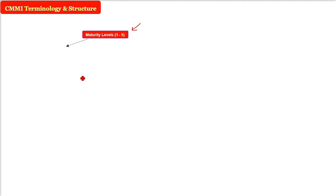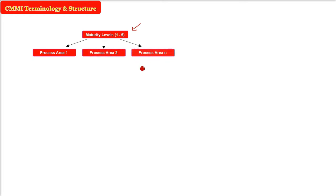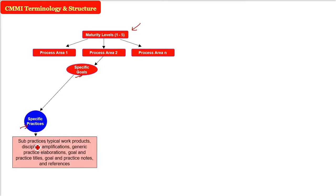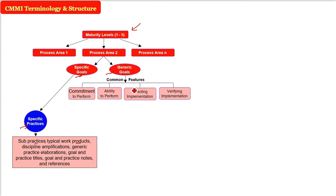To understand CMMI's structure: there are maturity levels one to five, each containing process areas (Process Area 1, 2, ... N) representing functions to be completely satisfied. Within each process area there are two types of goals: specific goals and generic goals. Specific goals have specific practices, and generic goals have associated common features such as commitment to perform and ability to perform.